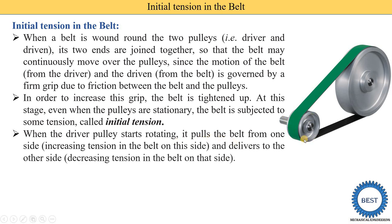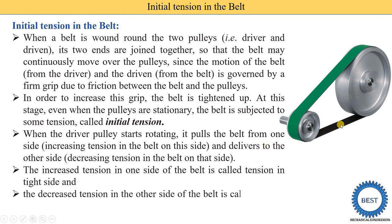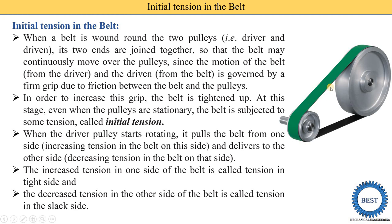If we put the belt in a loose condition, the pulley rotates but the belt does not rotate, so power is not transmitted. That is why we need to tighten the belt. When the driver pulley starts rotating in a clockwise direction, it pulls the belt from one side — this side is called the tight side and the tension increases here. On the other side the tension decreases — this is called the slack side. The increased tension on one side is called tension in the tight side (T1), and the other side is called tension in the slack side (T2).